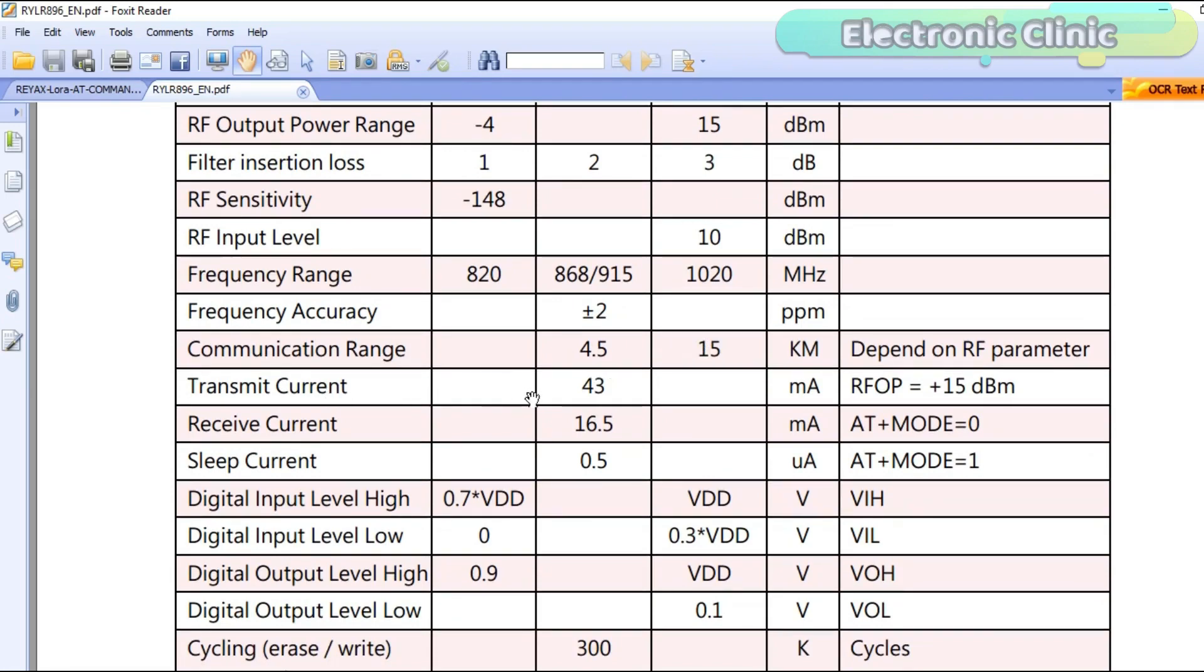Transmit current typical value is 43 milliamps. Receive current typical value is 16.5 milliamps.